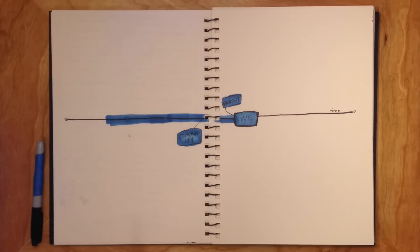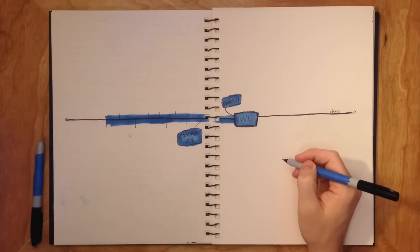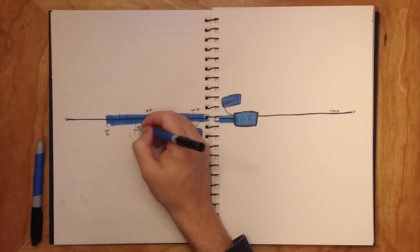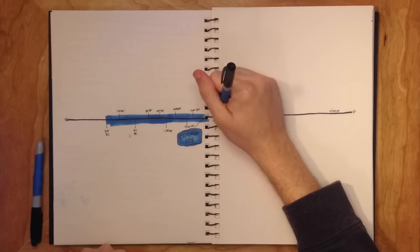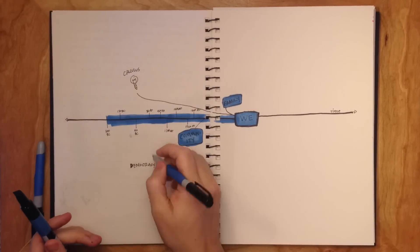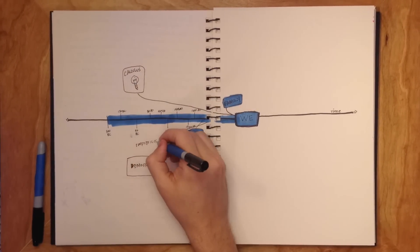Soon we learn about the history of our country and back and back and not only back but up as well because we're learning not about events but about thoughts of people from centuries ago. Calculus, democracy, empiricism.